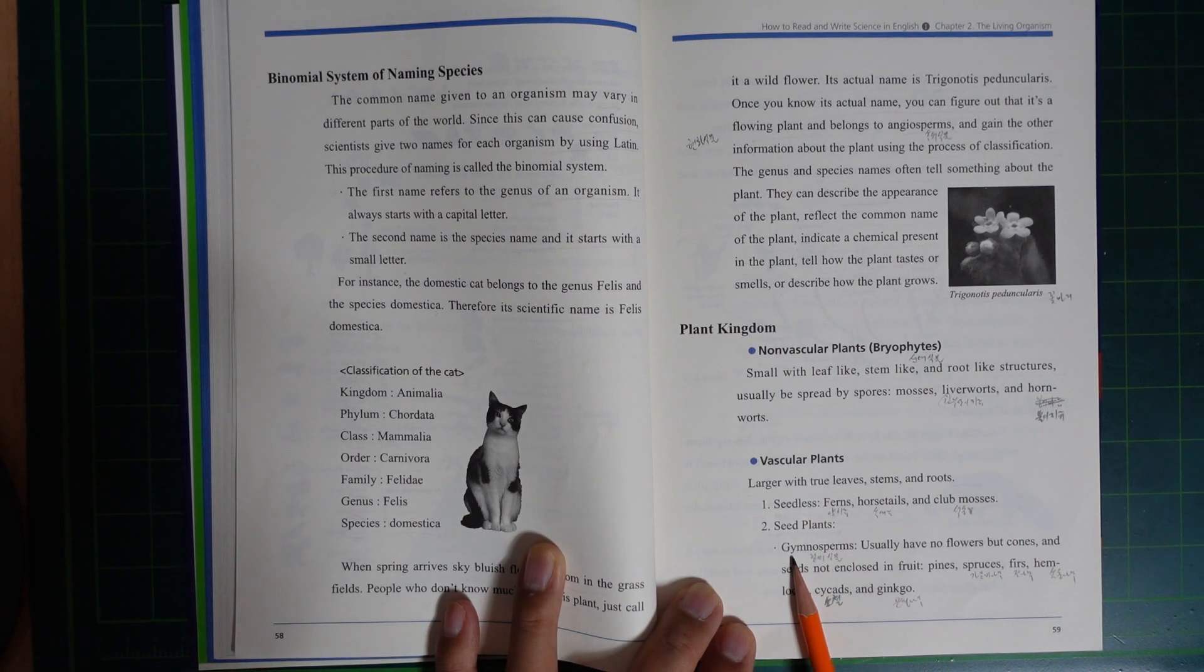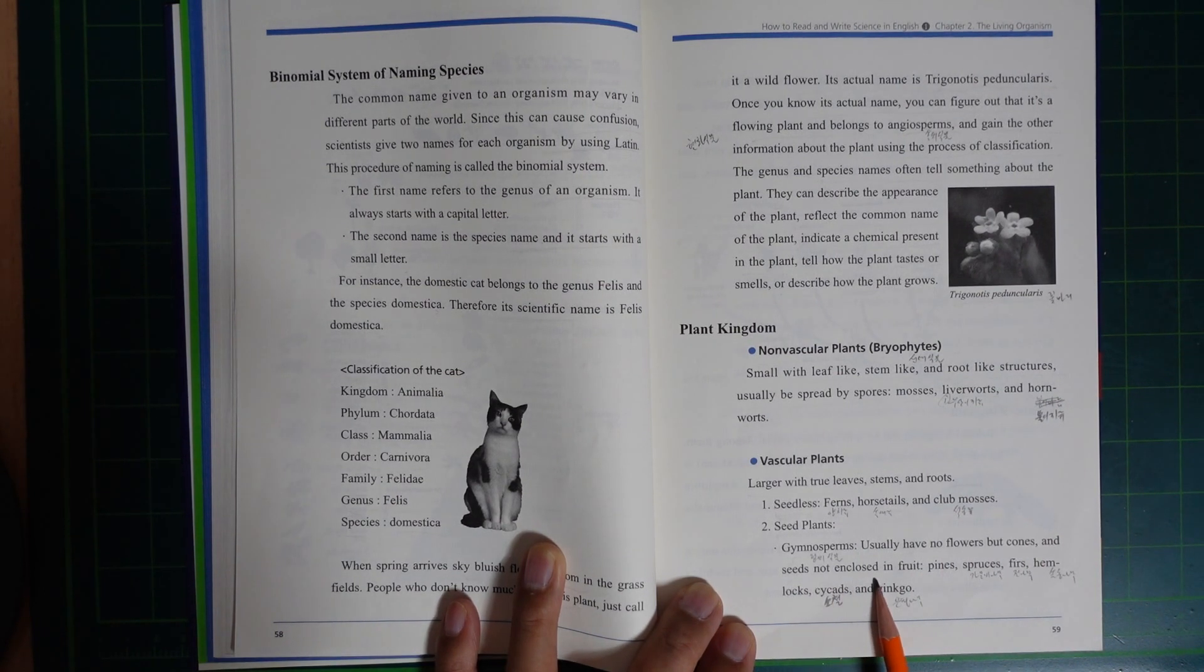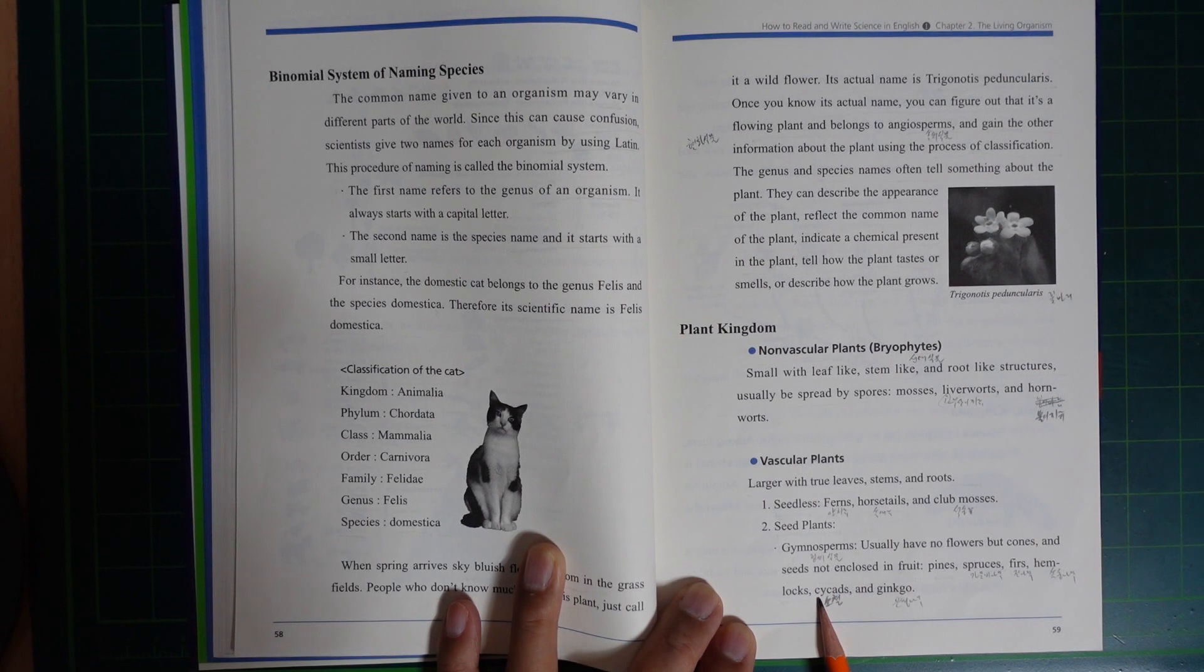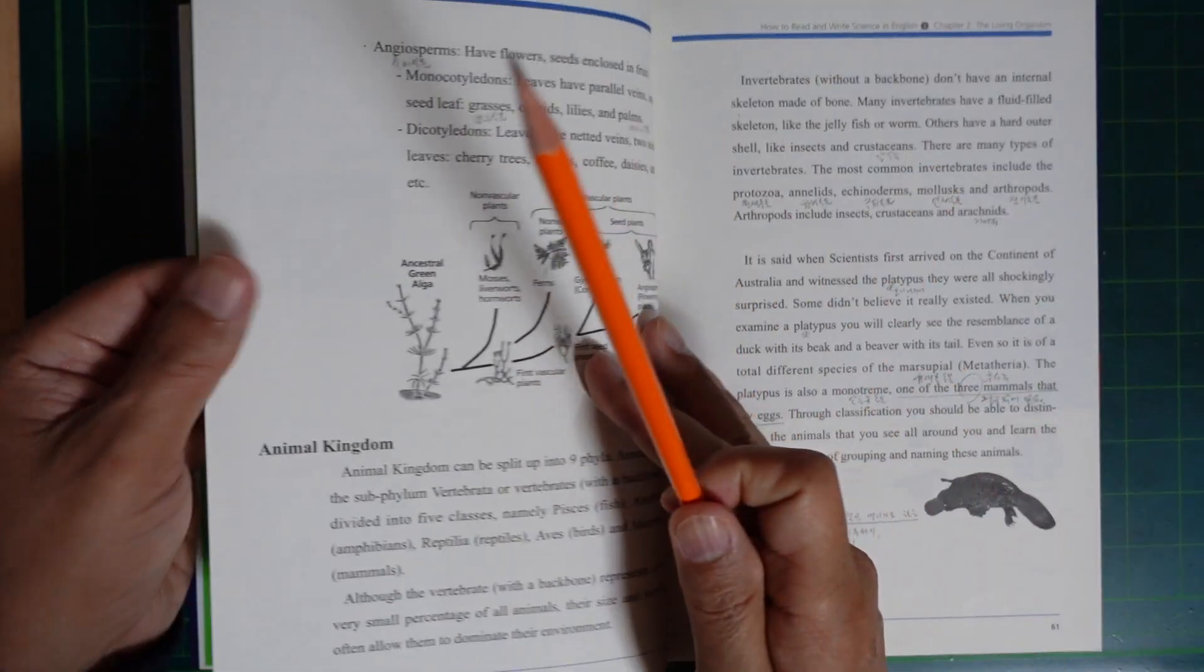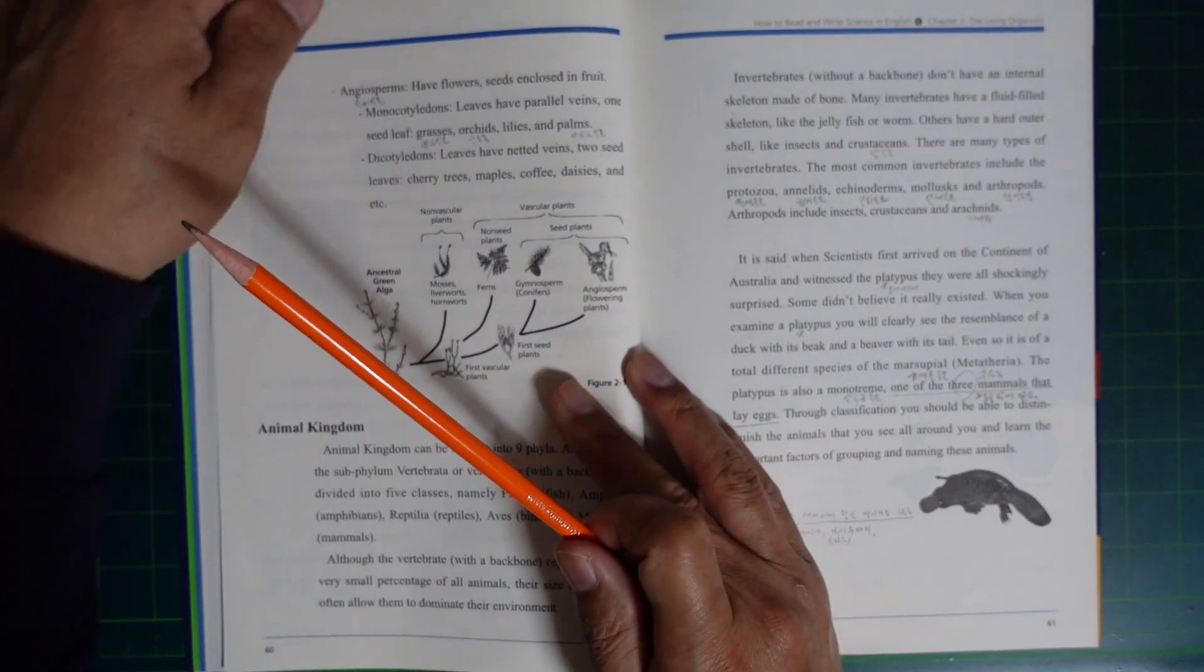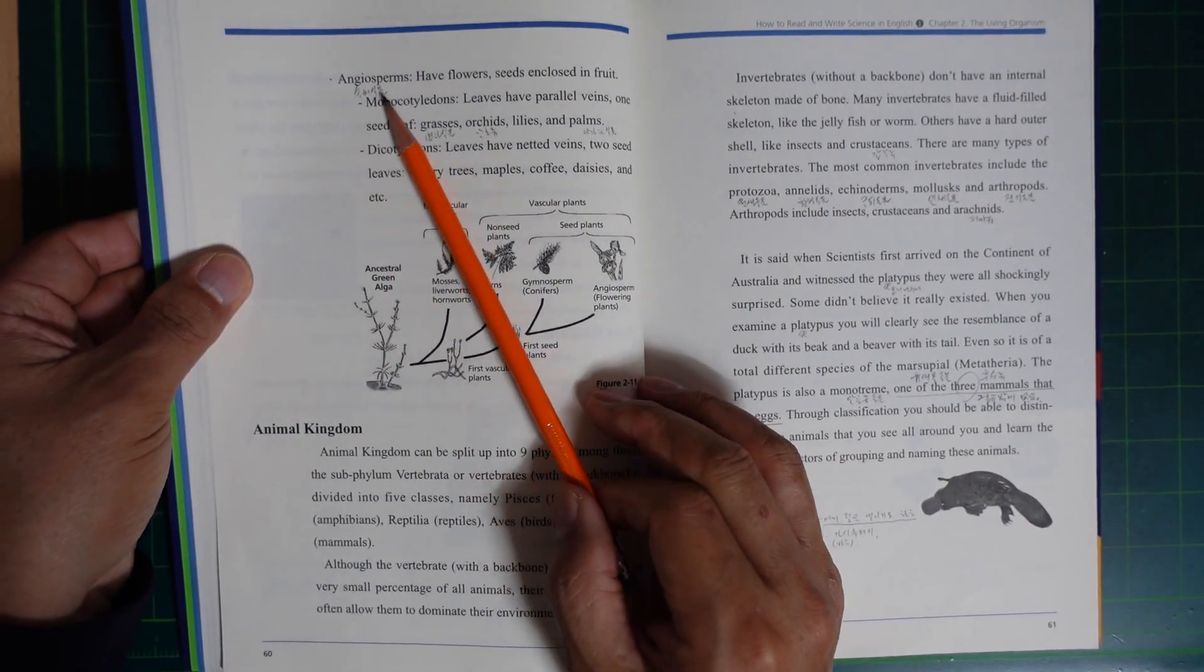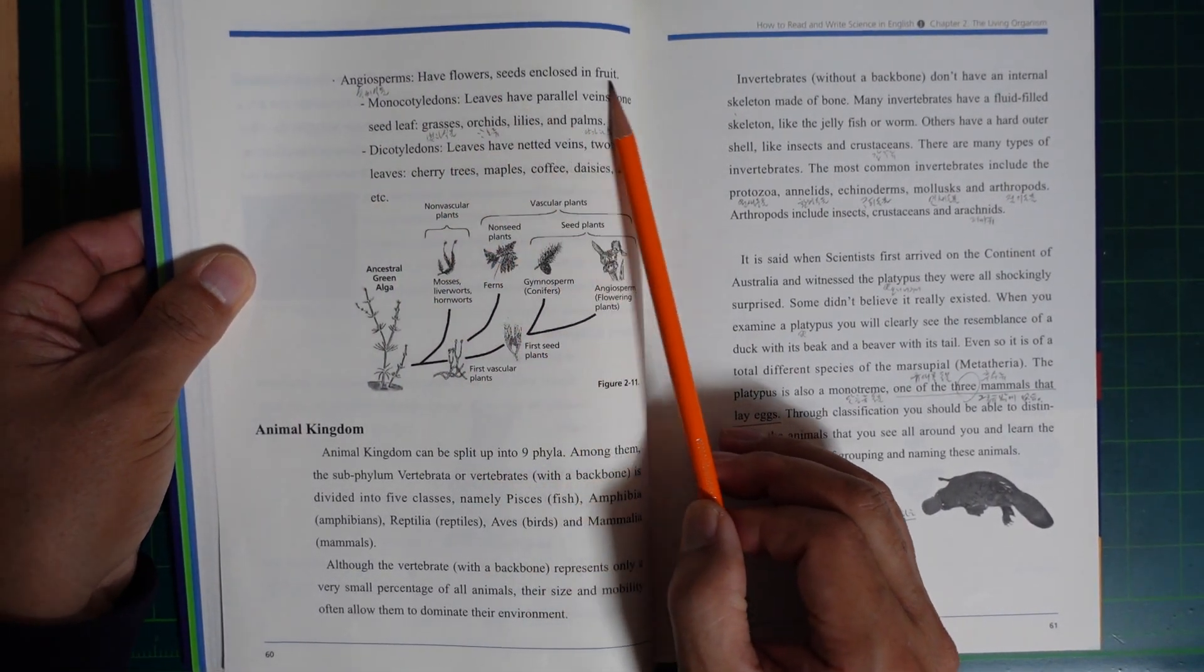Seed plants: Gymnosperms usually have no flowers but cones, and seeds not enclosed in fruit. Examples include spruce, fir, hemlock, and cycads. Angiosperms have flowers and seeds enclosed in fruit.